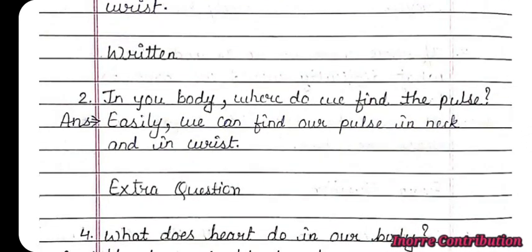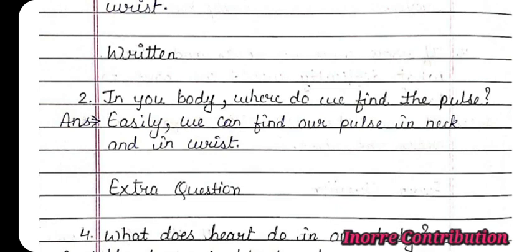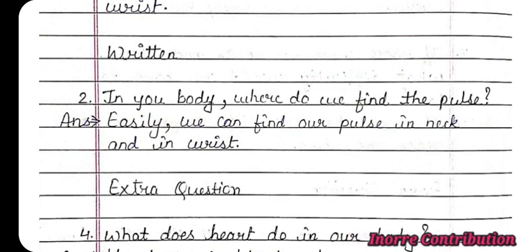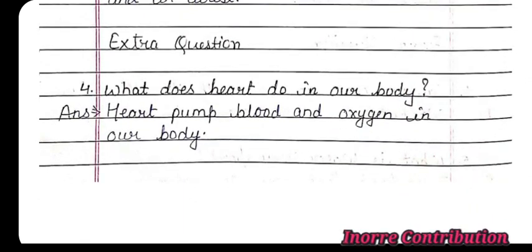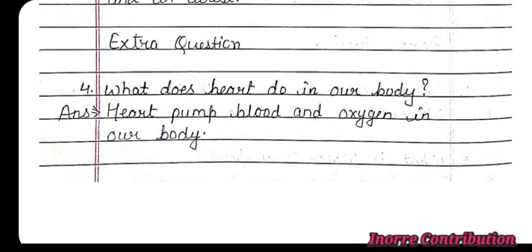Written questions. In your body, where do we find the pulse? Answer: we can easily find our pulse in the neck and in the wrist. Extra question: what does the heart do in our body? Answer: the heart pumps blood and oxygen in our body.